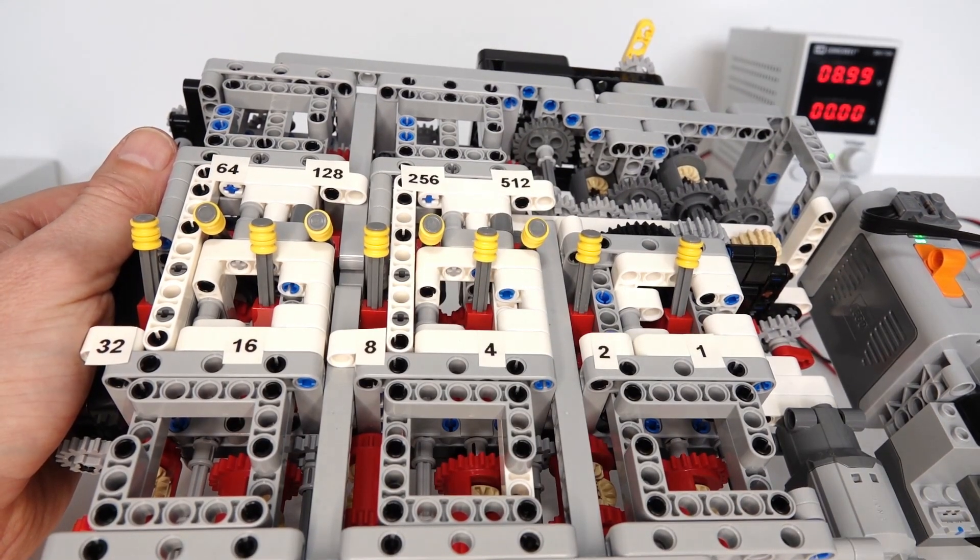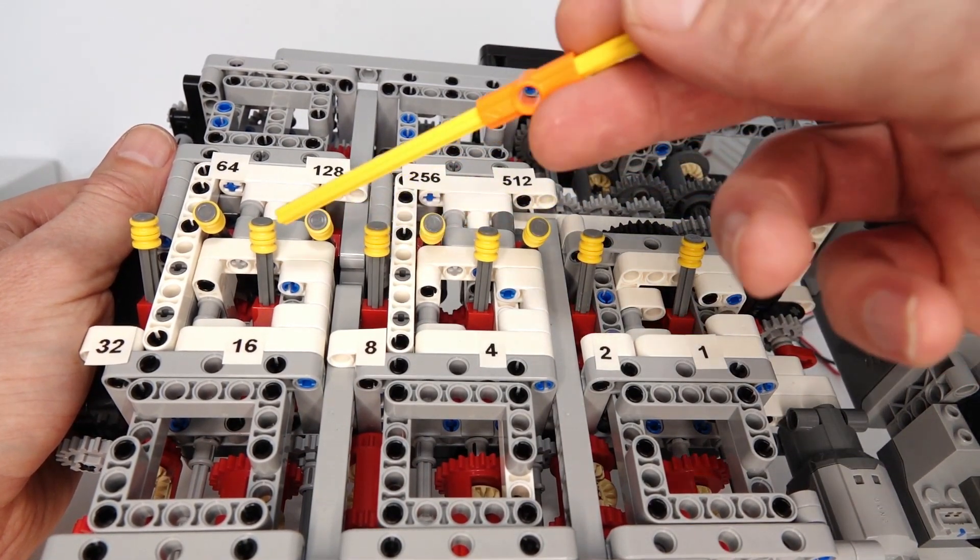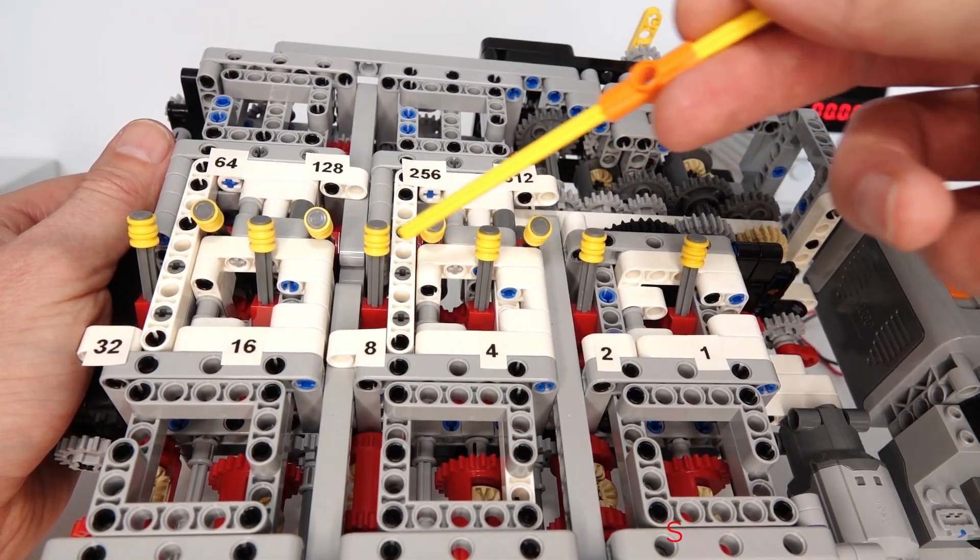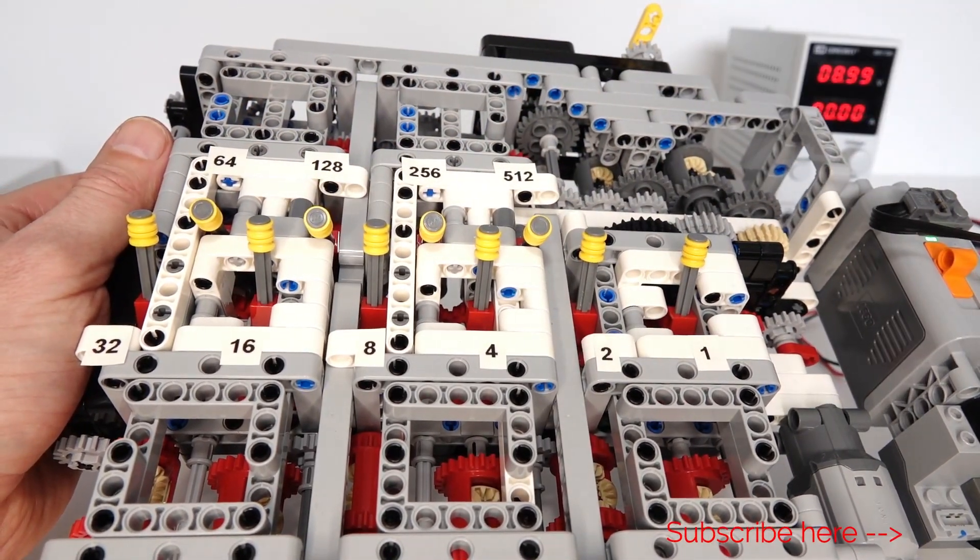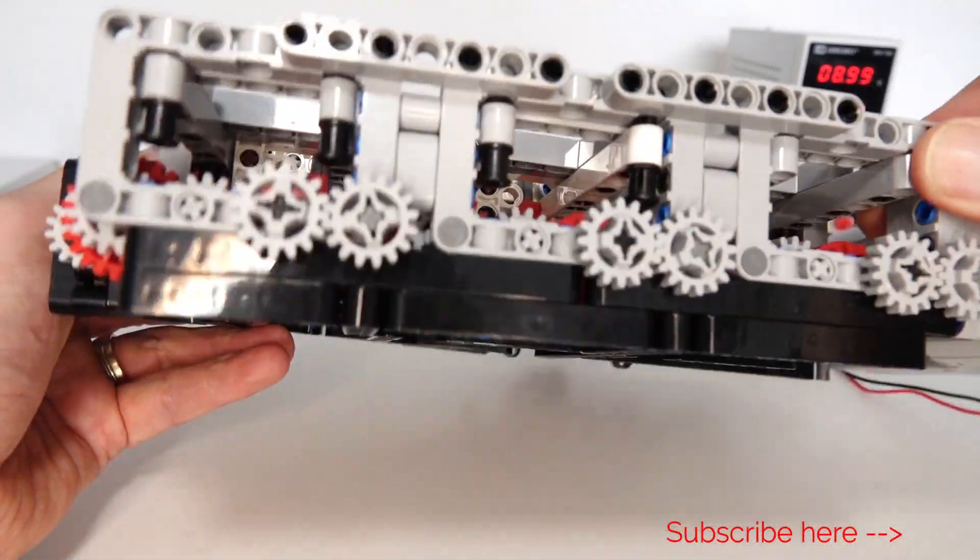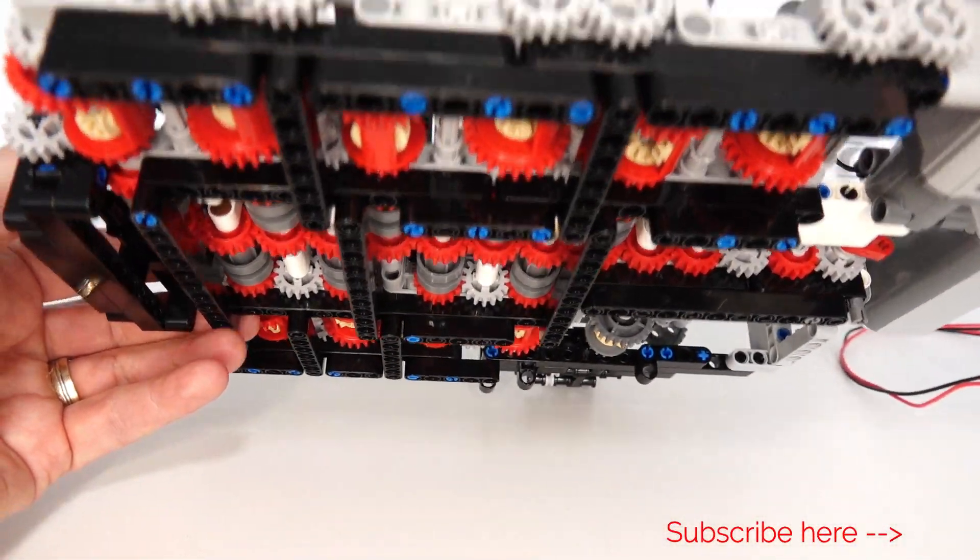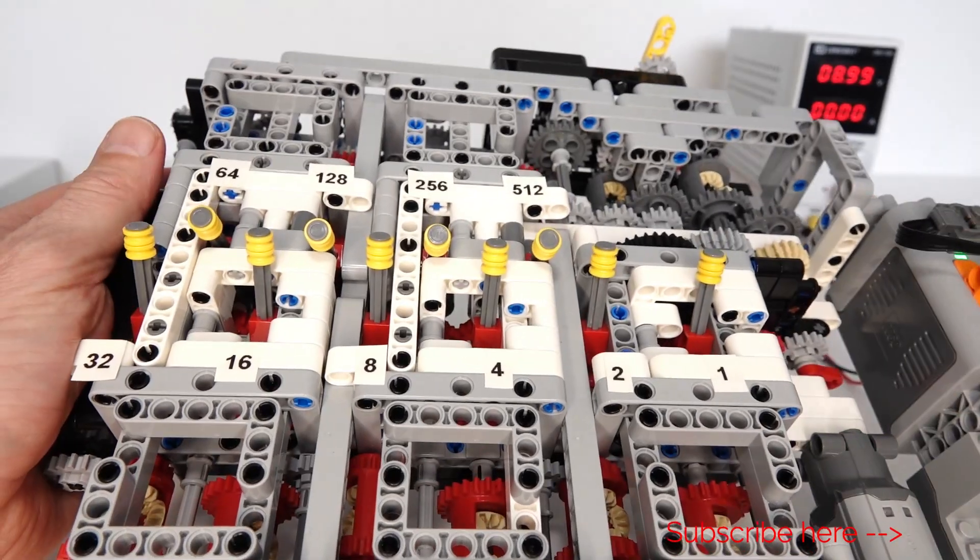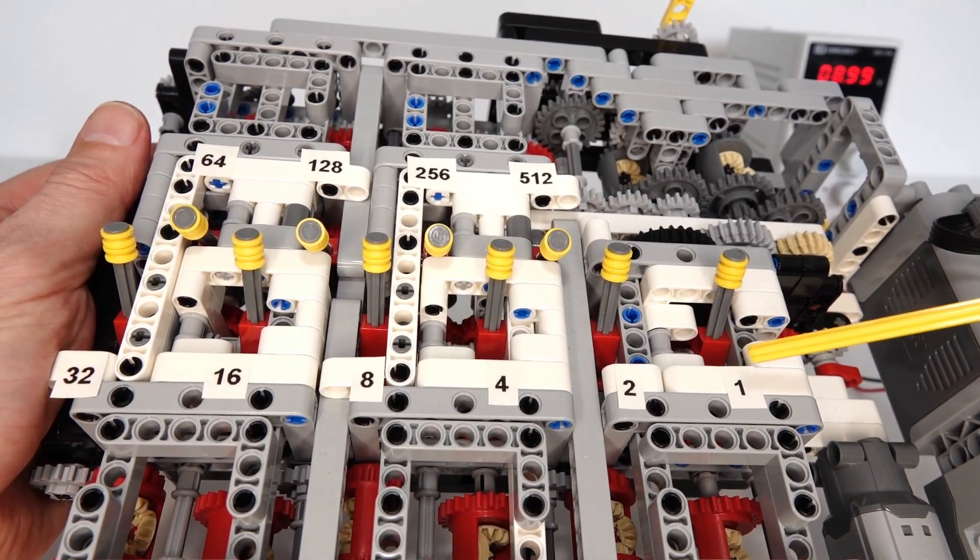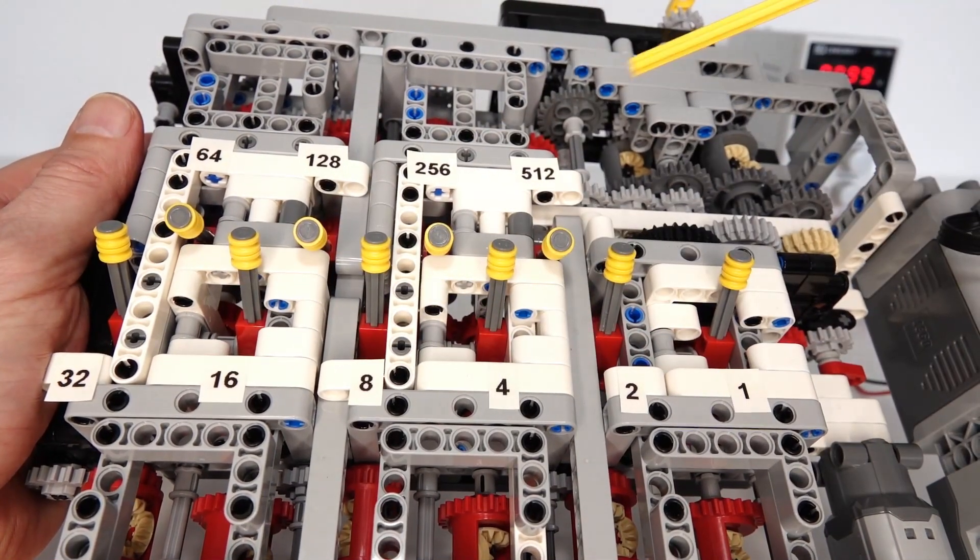The way this gearbox works is that I've got 10 different switches in the middle here. So I've got 1, 2, 3, 4, 5, 6, 7, 8, 9, 10 connected to 10 differentials around the back. Each of these switches has got a label on it: 1, 2, 4, 8, 16, all the way up to 512. You might notice these labels are pretty much a binary number expansion.